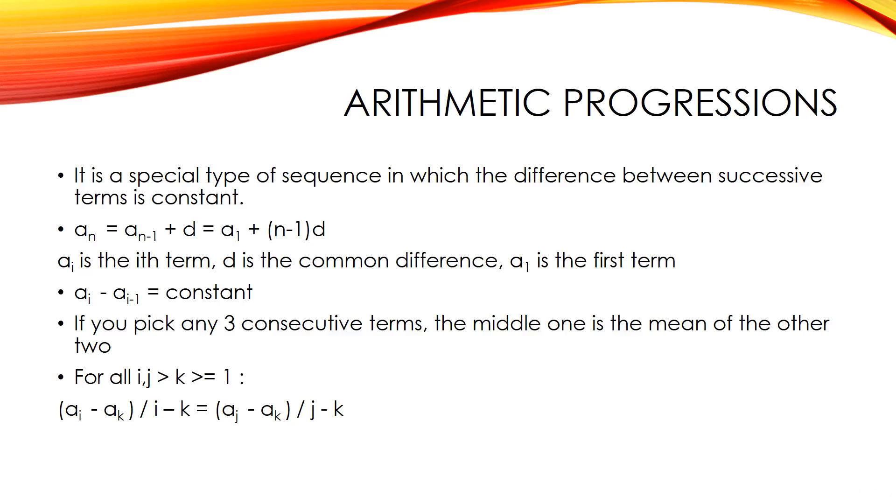Arithmetic progression is a special type of sequence in which the difference between successive terms is constant. So the general term is given by an equals an-1 plus d equals a1 plus n-1 into d. ai is the ith term, d is the common difference and a1 is the first term.